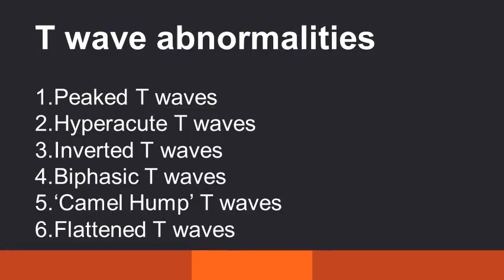The abnormal T waves are peaked T waves, hyperacute T waves, inverted T waves, biphasic T waves, camel hump T waves, and flattened T waves.